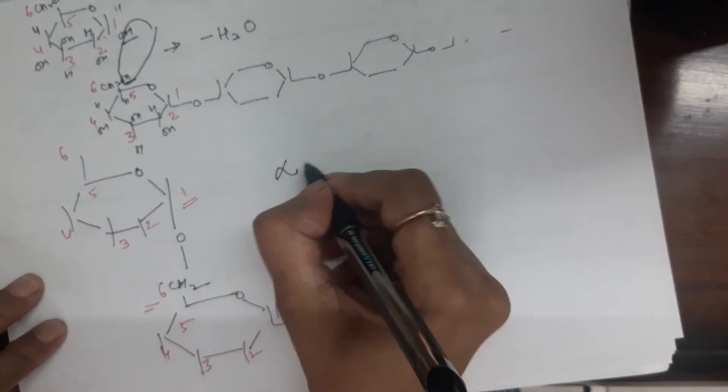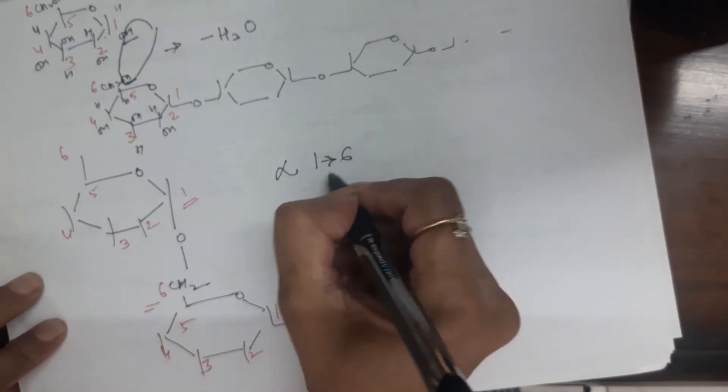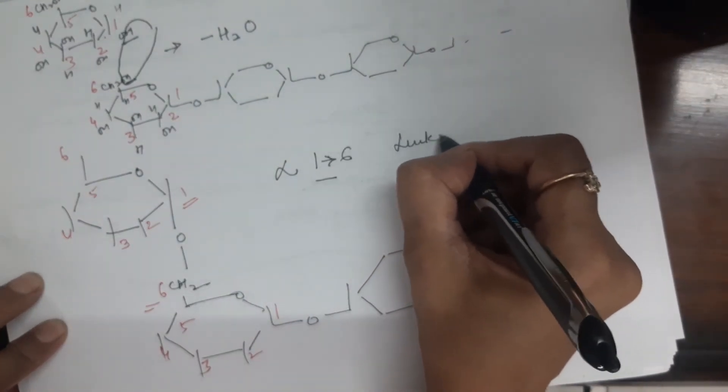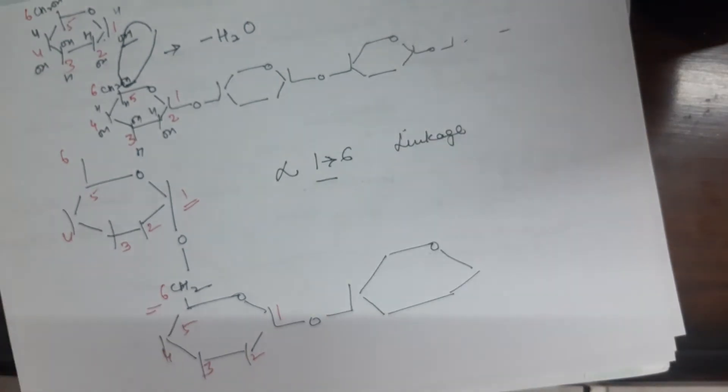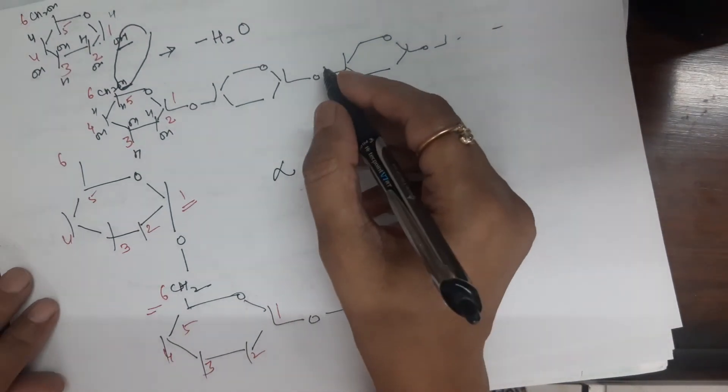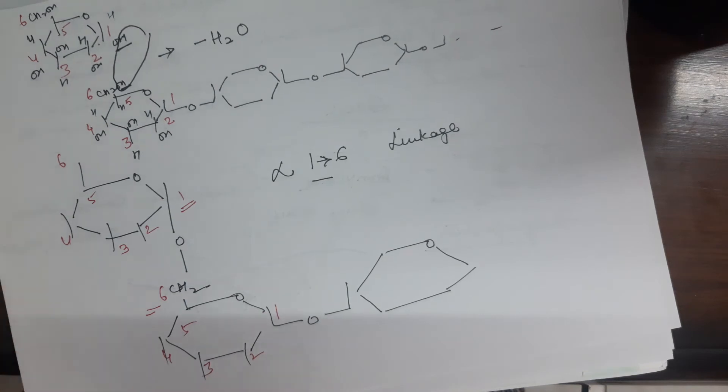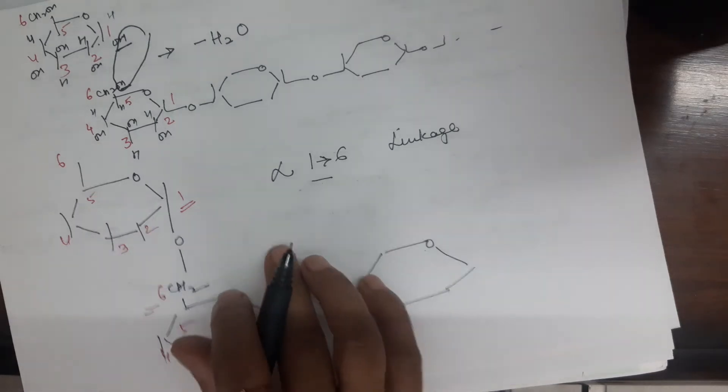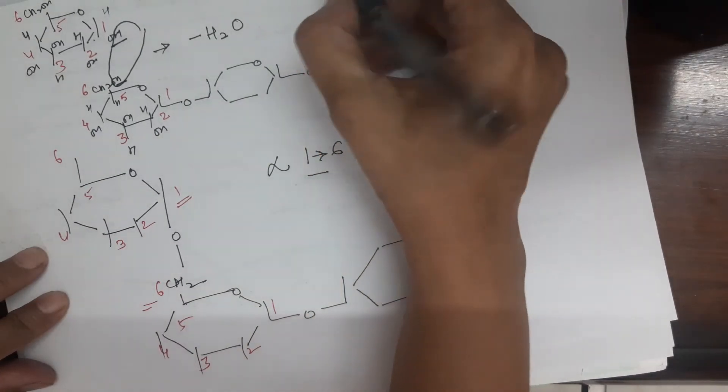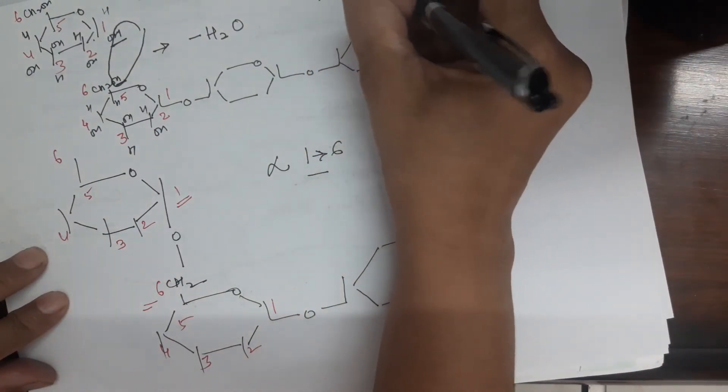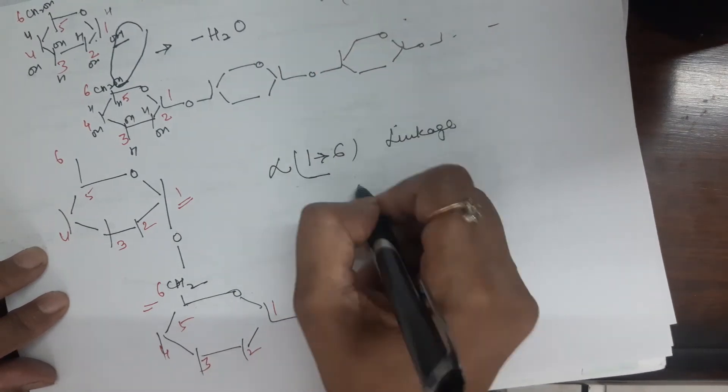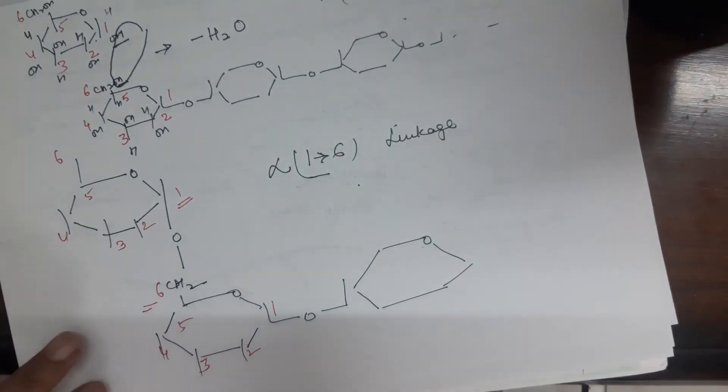So, this linkage is called alpha 1,6 linkage. So, remember, straight chain is formed by alpha 1,4 linkage. And the branch is formed by alpha 1,6. Straight 1,4 and branch 1,6 linkage. Remember this.